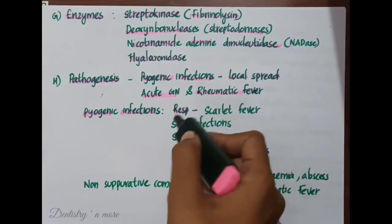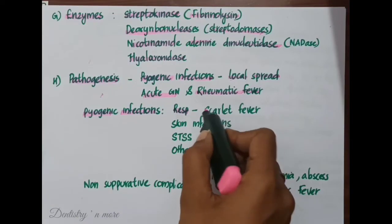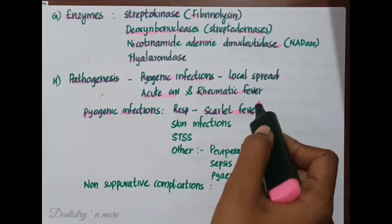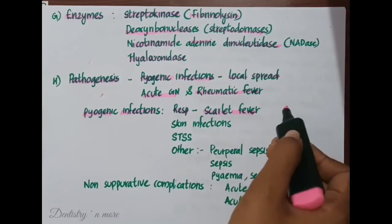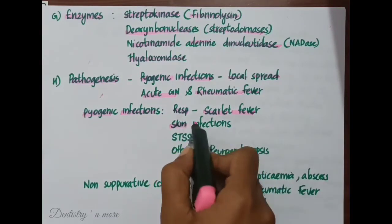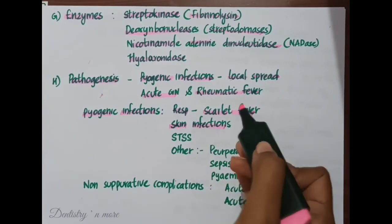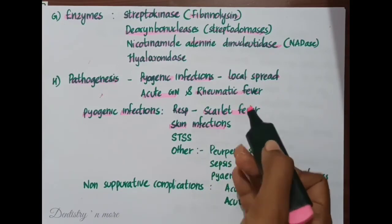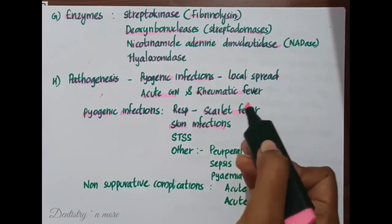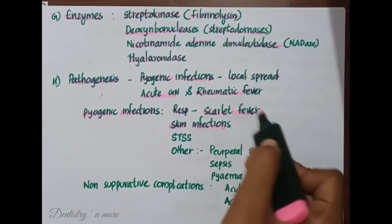Pyogenic infections caused by Streptococcus pyogenes include respiratory infections, of which sore throat is the most common. In scarlet fever, it is a combination of sore throat and a generalized erythematous rash caused by a strain producing the erythrogenic toxin. Skin infections produce suppurative infections with a predilection for lymphangitis and cellulitis, and infection of minor abrasions may sometimes lead to fatal septicemia.